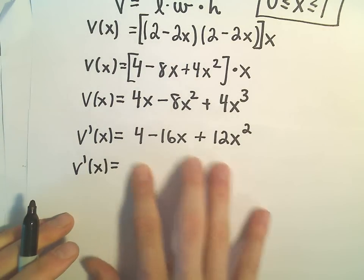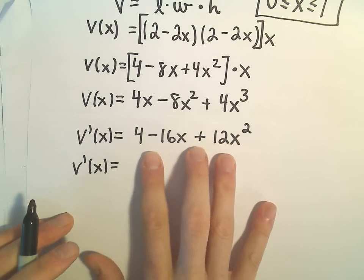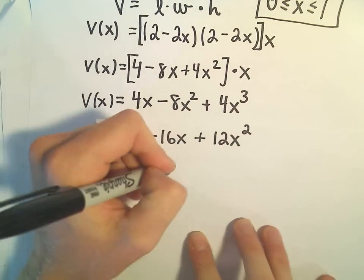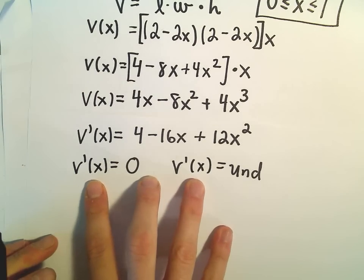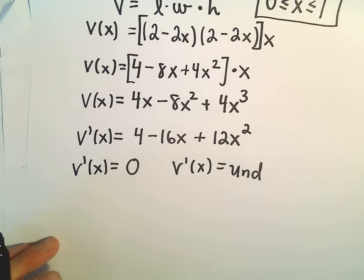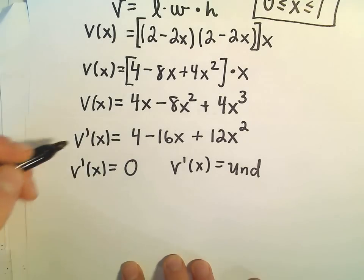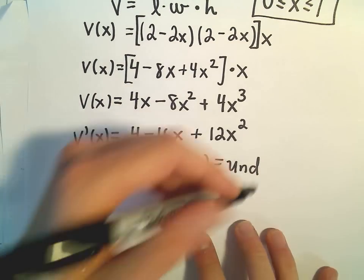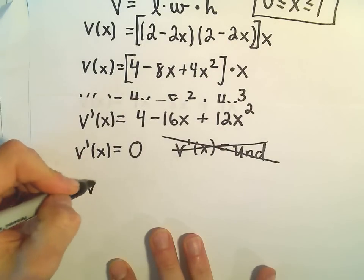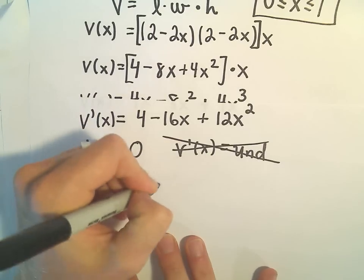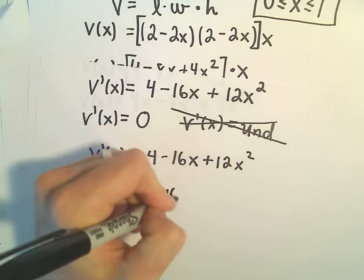Now what we're going to do, there's not really much simplification I think we can do to this function. We have to find critical points. Critical points are where the derivative is 0 or where the derivative is undefined. These solutions technically have to be in the domain of the original function, which they certainly will be because the original function has domain all real numbers. There's nothing that makes this function undefined, so we don't really have to worry about satisfying this equation at all. So V prime of x, which is 4 minus 16x plus 12x squared, what we're going to have to do is we'll have to solve that equation where we set it equal to 0.